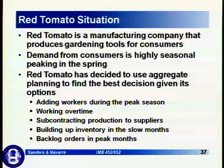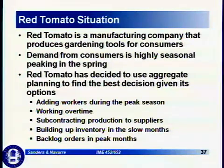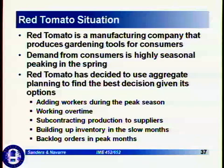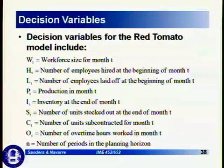Red Tomato has decided to use aggregate planning to find the best decisions given its options. Should it add workers during the peak season, or simply work overtime? Should it do a blend of either of those? Should it subcontract production to some of its suppliers? Should it build up inventory in the slow months, and should it backlog orders during peak months of demand? All of these things can be considered using the model we're going to explain.